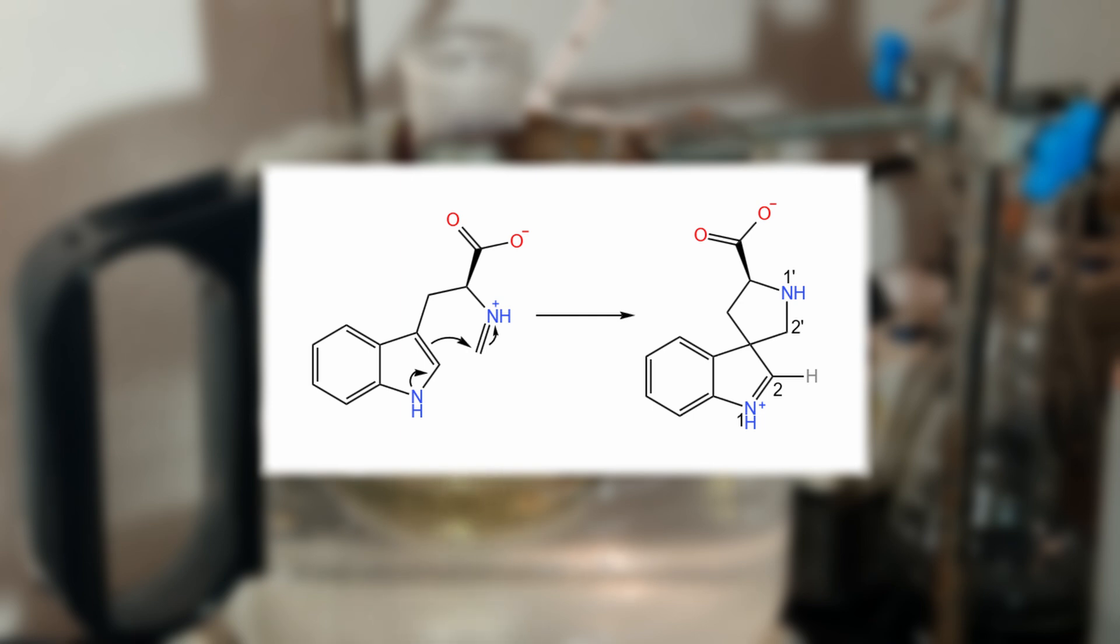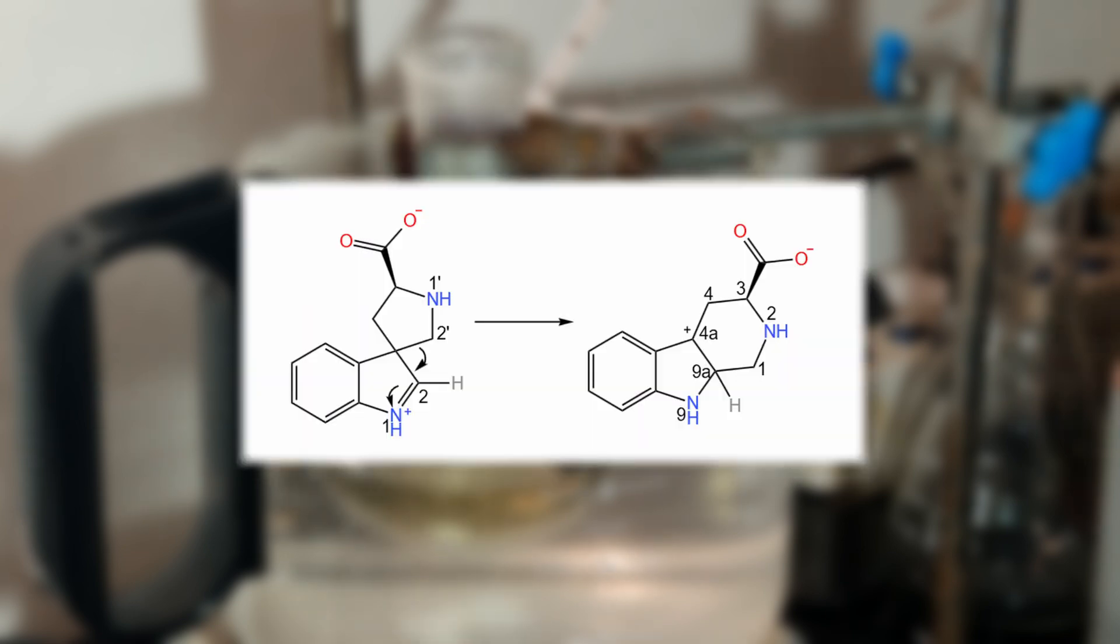This forms a rather peculiar spiroindole-3,3'-pyrrolidine-5'-carboxylate structure. Then a rearrangement occurs. The electrons forming the sigma bond between the quaternary carbon and the 2' position carbon migrate to the 2' position carbon, thus forming the pentahydrocarboline skeleton with a tertiary carbocation in the 4A position.